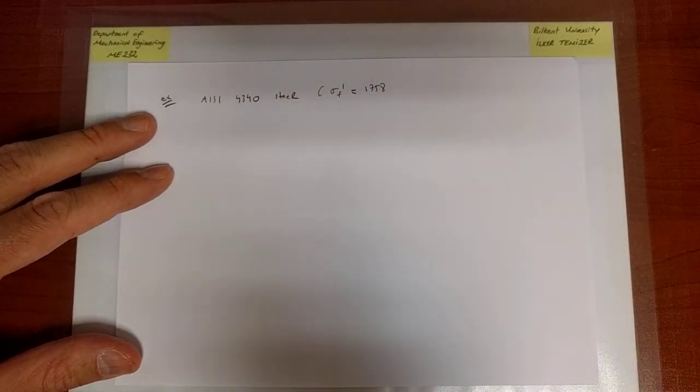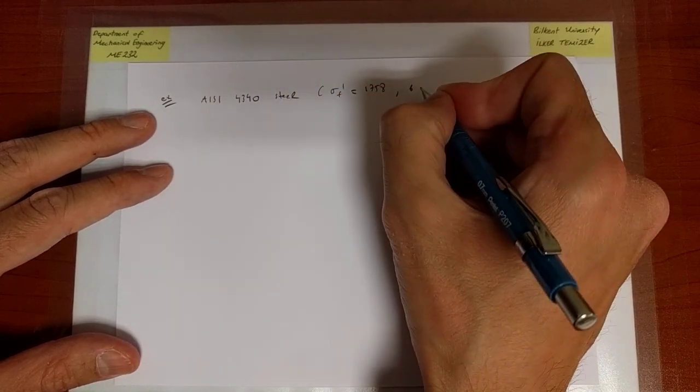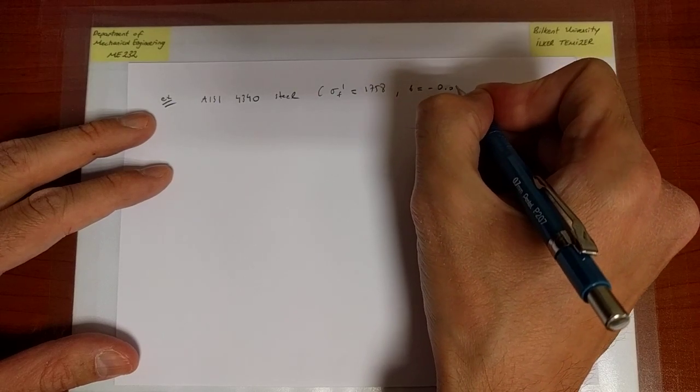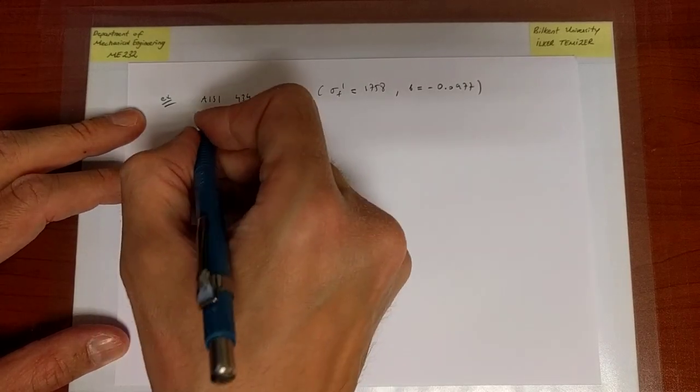Once that material is given, we can go to the tables in the book and extract the relevant material data. In this case, sigma f prime and b values that appear in the Basquian equation are found.